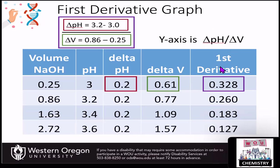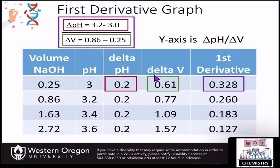You can graph this in Excel — plot the volume on the x-axis and the first derivative on the y-axis. To find the change in pH, you take the value above and subtract the value below, giving you 0.2 here, and keep doing that as you go up. For the change in volume, you take the volume above and subtract the volume below — so 0.86 minus 0.25 — giving you the change in volume. Divide the two in this column to get the first derivative.